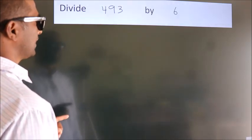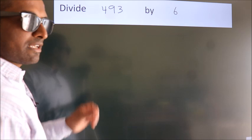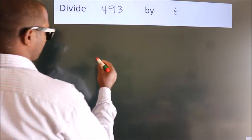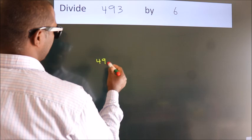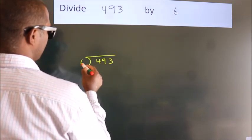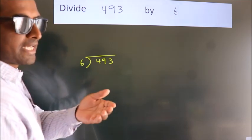Divide 493 by 6. To do this division we should frame it in this way. 493 here, 6 here. This is your step 1. Next.